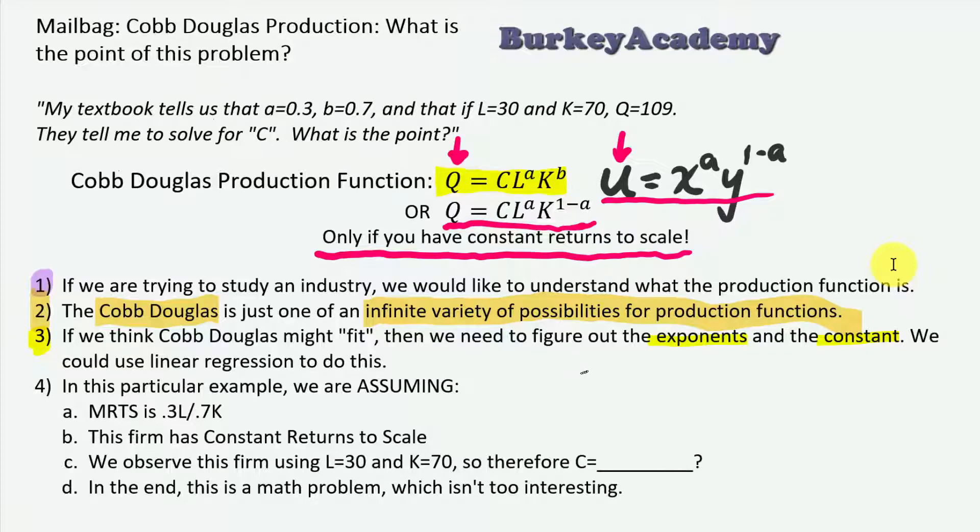What we'd like to do in this kind of situation is go out and collect some data on this industry in different periods of time: how many workers are they using, how much capital are they using, and how much output. Just go collect a lot of data - the more the better. In this kind of case, I'd say bare minimum 10 or 15 observations, but ideally hundreds of observations for a firm. Then we could use linear regression, and linear regression can help us figure out what those constants and slopes are.